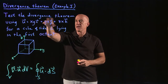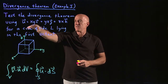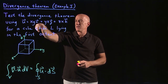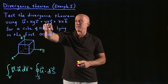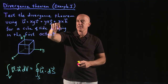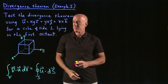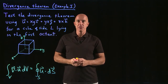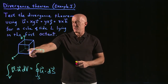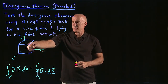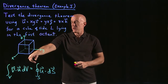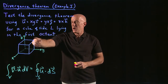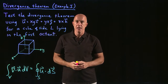We're going to test the divergence theorem using a vector field u = xy i + yz j + zx k, for a cube of side l lying in the first octant, which means x, y, and z are all positive. The faces of the cube are in the planes of the axes.